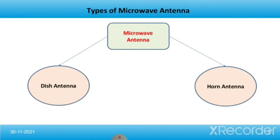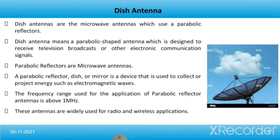Now we will talk about the types of microwave antenna. Microwave antennas are divided into two types: dish antenna and horn antenna. First we will discuss about dish antenna. Dish antennas are microwave antennas which use parabolic reflectors. A dish antenna is a parabolic-shaped antenna designed to receive television broadcast or other electronic communication signals. Parabolic reflectors are microwave antennas used to collect or project energy such as electromagnetic waves. The frequency range used for parabolic reflector antennas is above 1 MHz, and these antennas are widely used for radio and wireless applications.